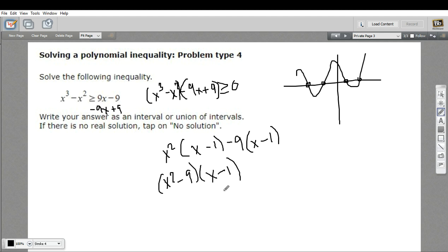So we can figure out our zeros pretty easily. I've got x minus 1 equals 0, so that would be 1 as one of our points. And then x squared minus 9, if I set that equal to 0,